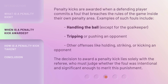Penalty kicks are awarded when a defending player commits a foul that breaches the rules of the game inside their own penalty area. Examples of such fouls include: handling the ball (except for the goalkeeper), tripping or pushing an opponent, and other offenses like holding, striking, or kicking an opponent. The decision to award a penalty kick lies solely with the referee, who must judge whether the foul was intentional and significant enough to merit this punishment.